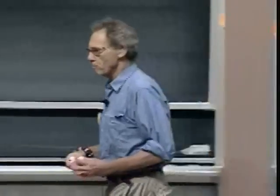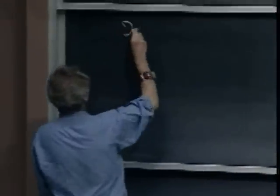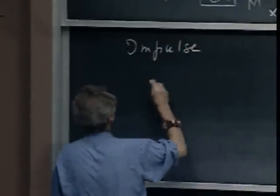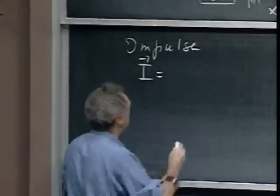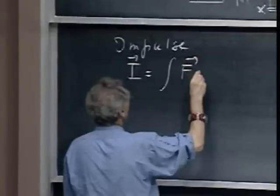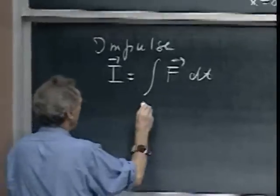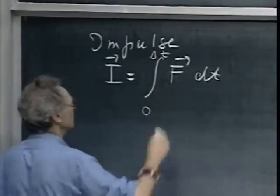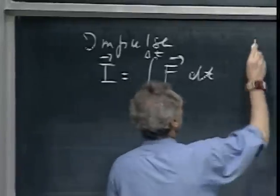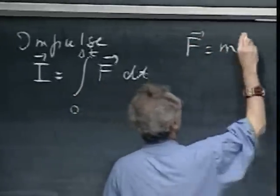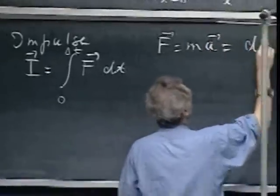Now I'm going to change to the concept of impulse — it's not completely unrelated to what we just did. An impulse is giving something a kick. Our bullet gave an impulse to this block. Impulse is a vector, and it is defined as the integral of F dt during a certain amount of time, say from zero to delta t.